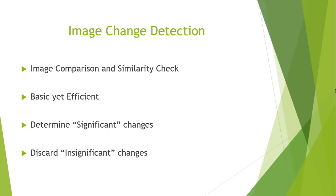Image change detection is a basic abstraction method which helps you analyze images and video frames. What you do is compare images and perform a similarity check or a non-similarity check — you try to see how different two images are from each other. It is a basic phenomenon but very efficient. Using image change detection, you can determine what changes are significant and what changes are insignificant.